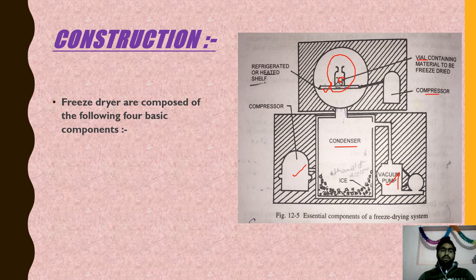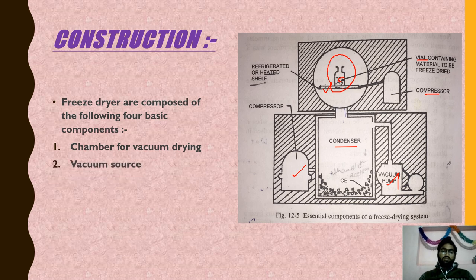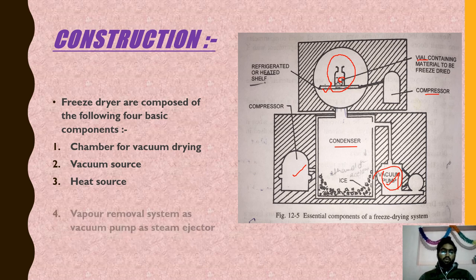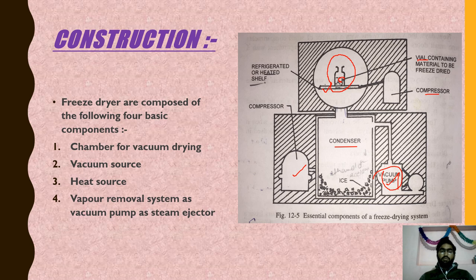Freeze dryers are composed of four basic components: first, a chamber for vacuum drying; second, a vacuum source (vacuum pump); third, a heat source placed beneath the bottles or vials; and fourth, a vapor removal system such as a vacuum pump or steam ejector.